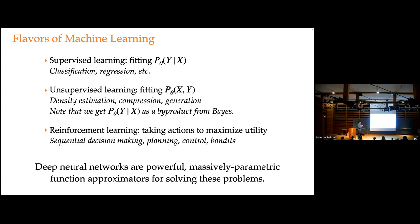Unsupervised learning maps to density estimation, compression, and generative AI. Something I said in a Q&A that raised eyebrows: unsupervised implies supervised. That's just Bayes theorem — if I have a parametric form for the joint distribution of everything, I can ask for conditionals. Generally, if I can solve that problem, I can do everything I want. We also think about reinforcement learning, where broadly speaking we're trying to take actions to maximize utility — often over time — covering sequential decision-making, control, planning, and bandit algorithms.